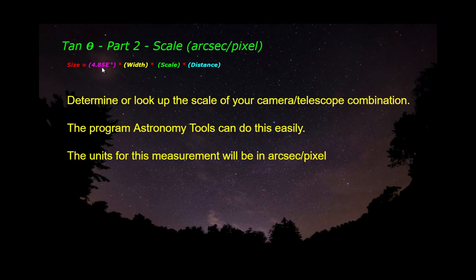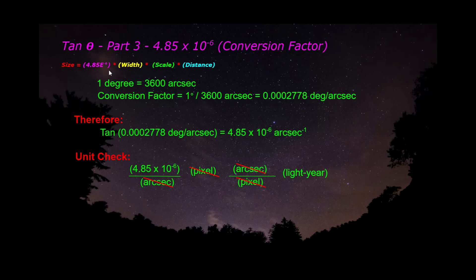Now for this last term. This last term is the conversion factor. And this conversion factor is used in order to convert your tangent, this tangent angle into a usable term. So remember, 1 degree is equal to 3600 arc seconds. Now that's actually a conversion factor. So you can write it as 1 over 3600. So 1 degree per 3600 arc seconds. And if you divide it out, you're going to get 0.0002778 arc seconds. Therefore, your tangent of 0.0002778, which is degree arc seconds, becomes 4.85 times 10 to the negative 6.